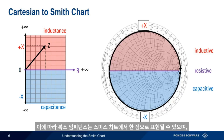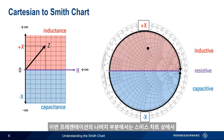A complex impedance appears as a point on the Smith Chart. In the remainder of this presentation, we're going to go step by step through the Smith Chart and explain what all of these curved lines and points actually mean.